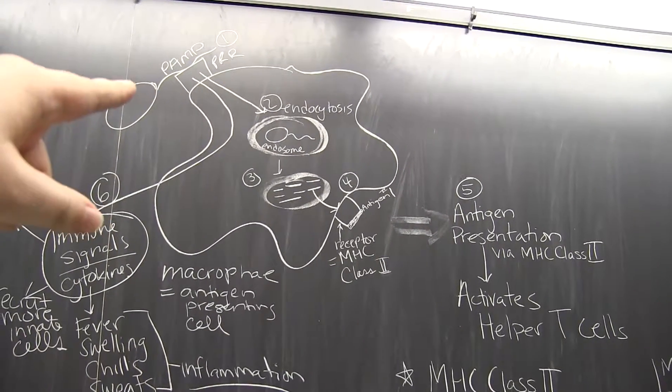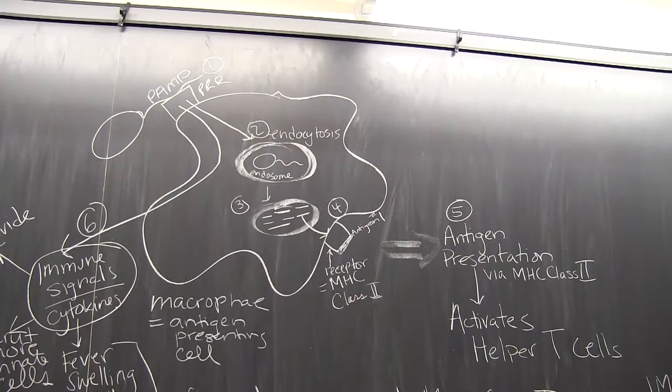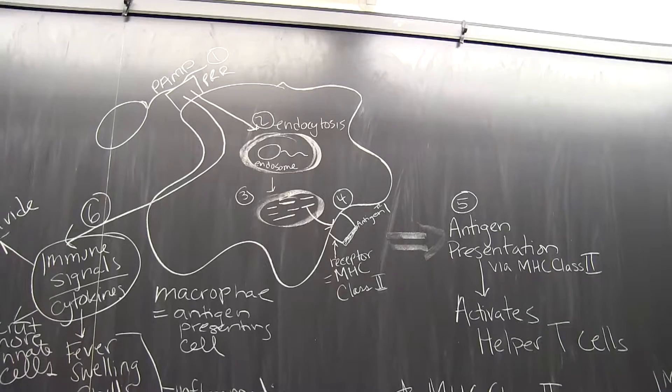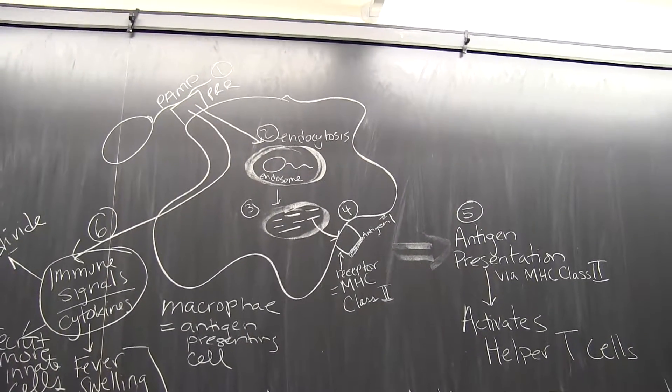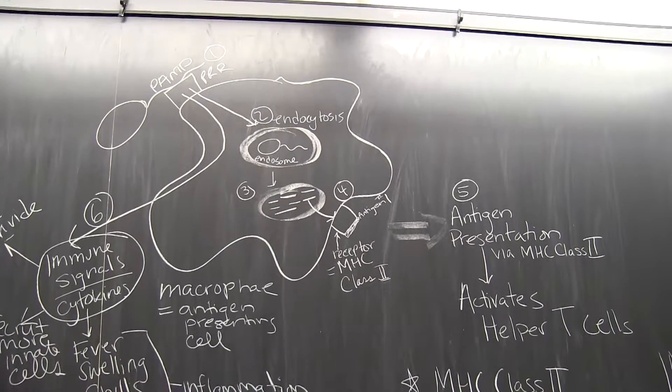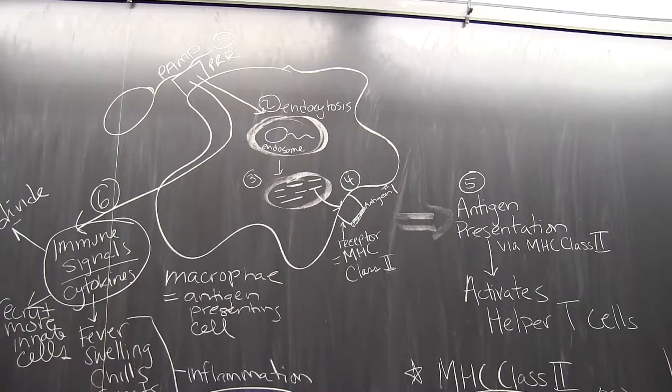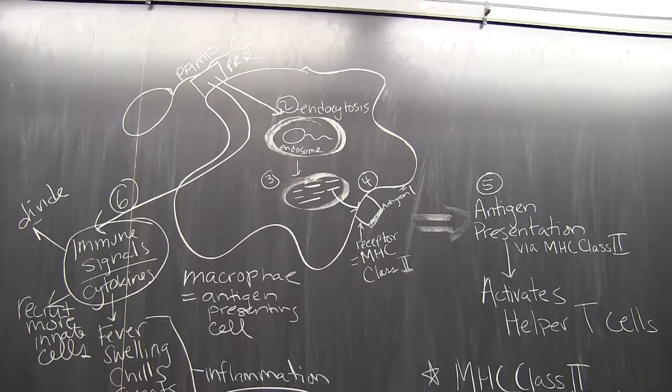And up there, I've shown our example of a PAMP, which is the flagella of a bacterium. And the PAMP is going to dock or be found by a pattern recognition receptor on the macrophage. And we went over the last time what steps happened after that. But briefly, there are two big actions that are going to happen once the PAMP binds to the PRR.